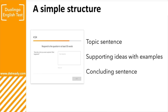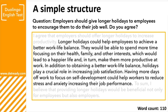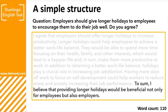Let me give you an example. The topic sentence might be: 'I agree that employers should offer longer holidays to increase productivity.' This topic sentence shows exactly what the whole paragraph is going to be about. Then you provide two supporting ideas which back up your topic sentence, with examples, and at the end you have a simple concluding sentence.